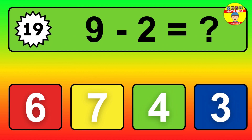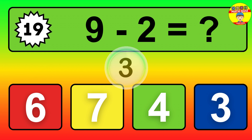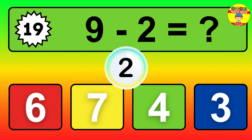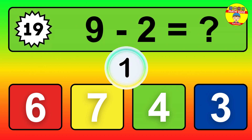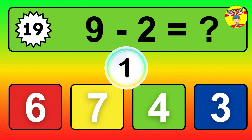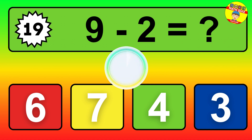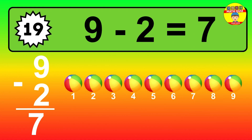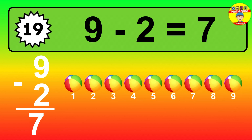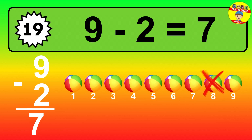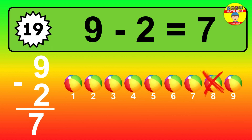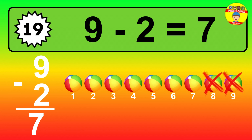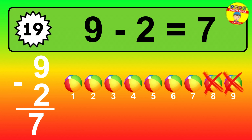Question 19. 9 minus 2 equals what? So the answer is 9 minus 2 is 7. Let's count it. 1, 2, 3, 4, 5, 6, 7.